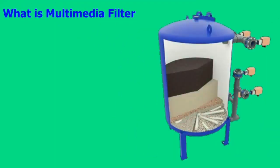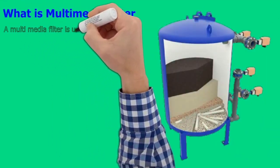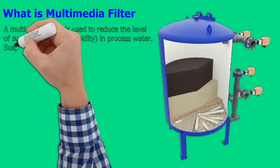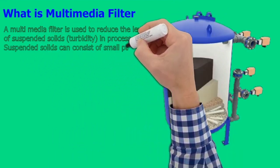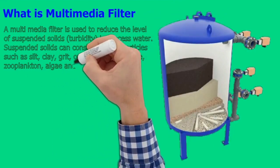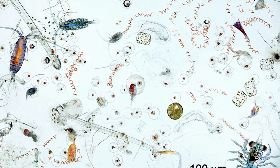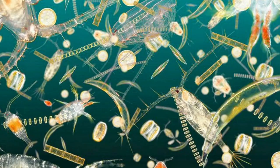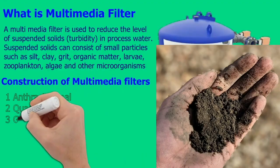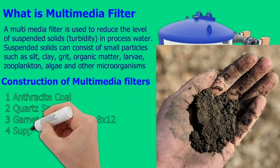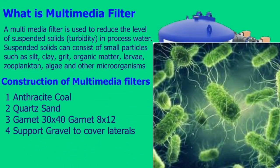What is a multimedia filter? A multimedia filter is used to reduce the level of suspended solids and turbidity in process water. Suspended solids can consist of small particles such as silt, clay, grit, organic matter, larvae, zooplankton, and algae.